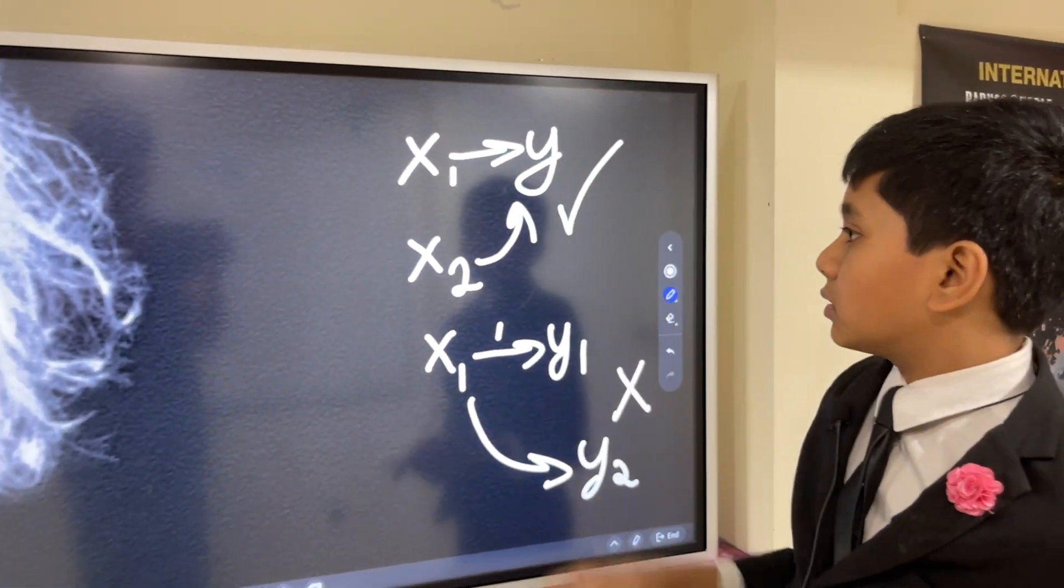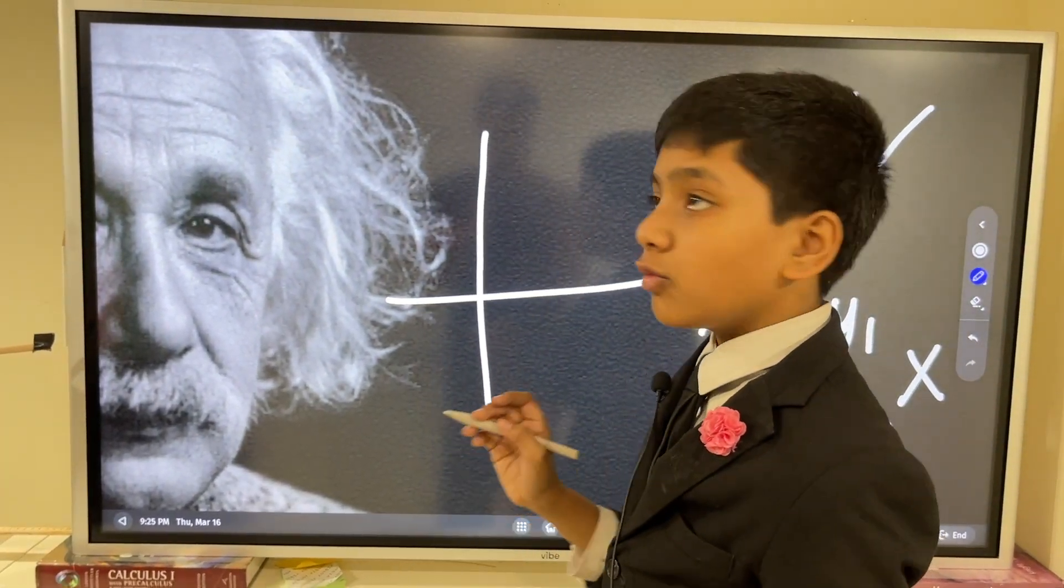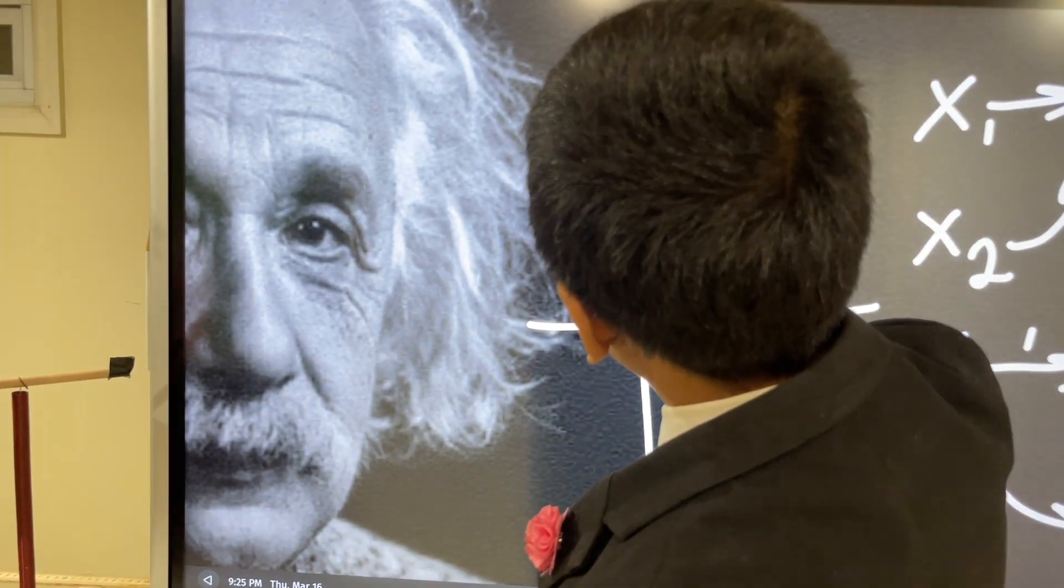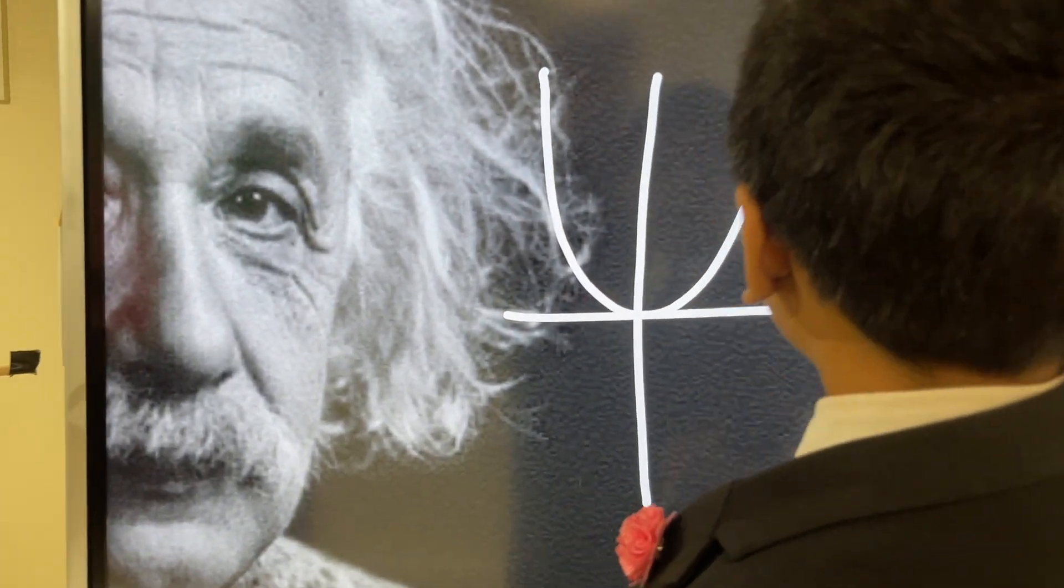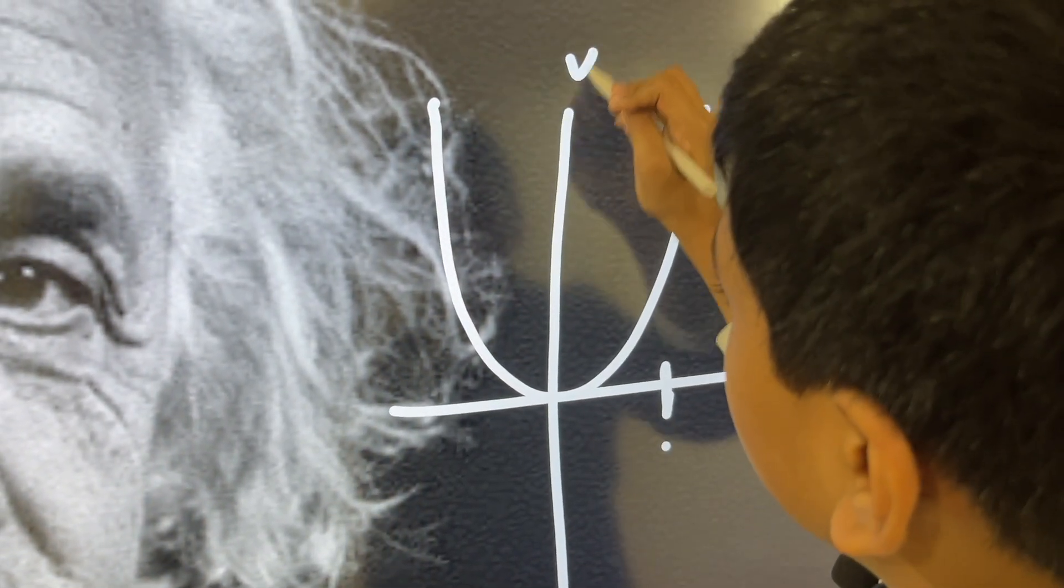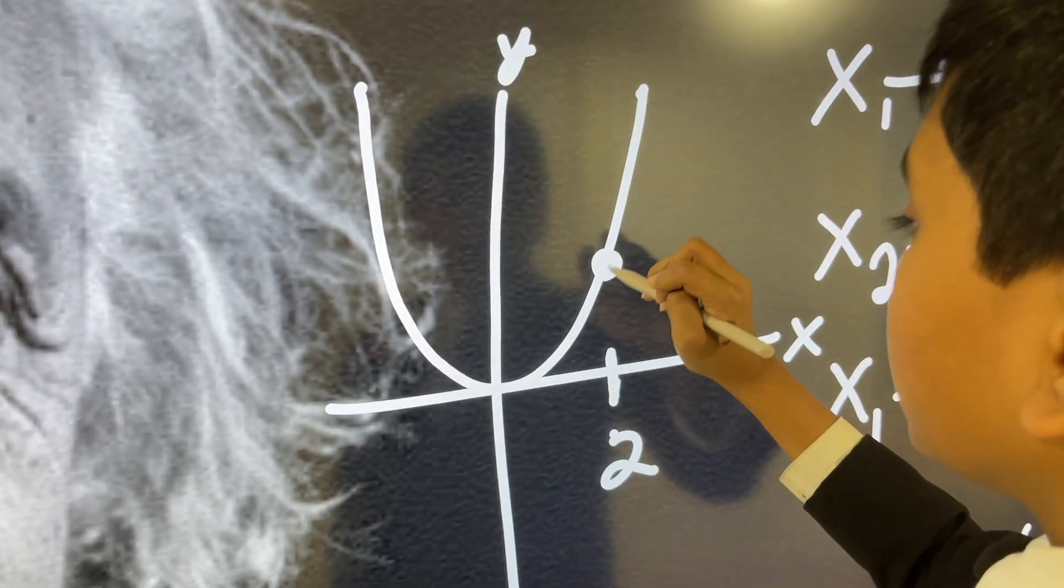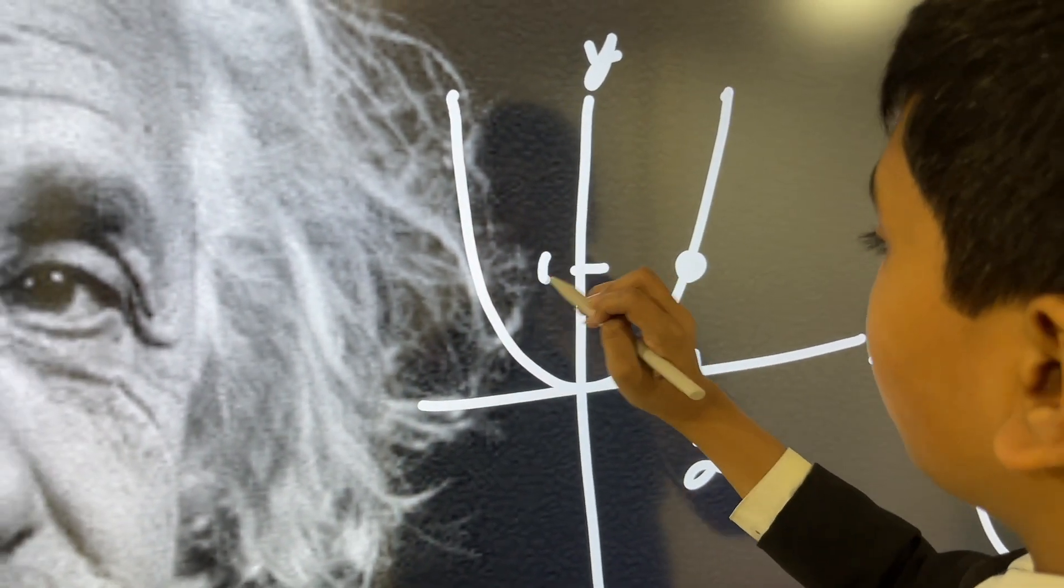So, let me show you an example of the top. Here, we have the graph of y equals x squared. Now, as you can see, this x right here, let's call it 2, for example, gives me this y, which is 4.